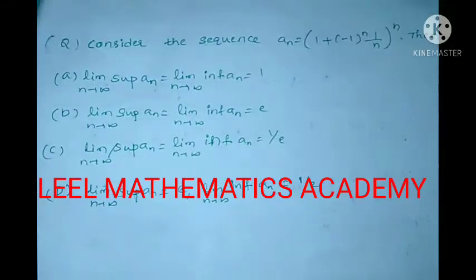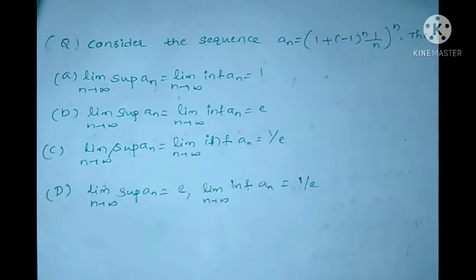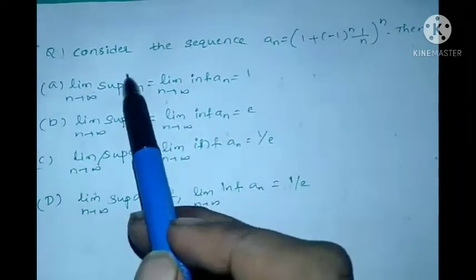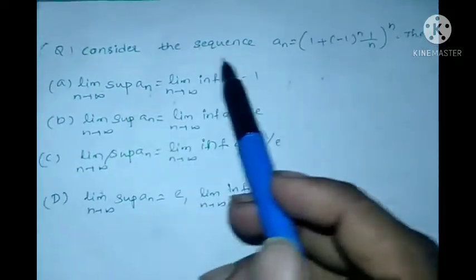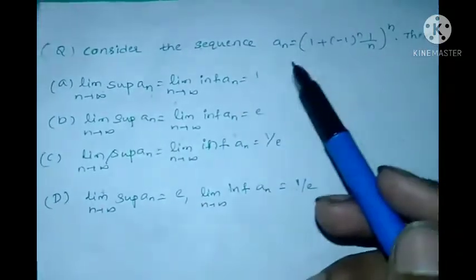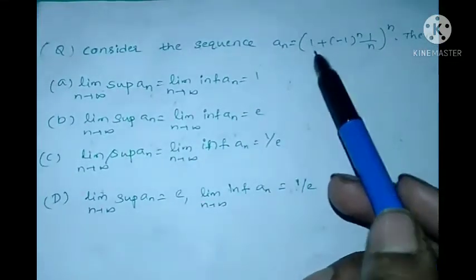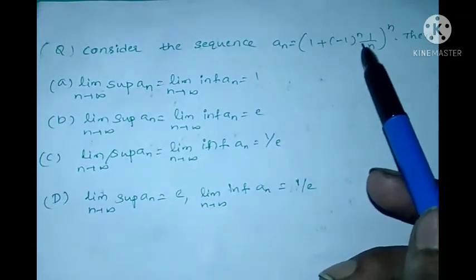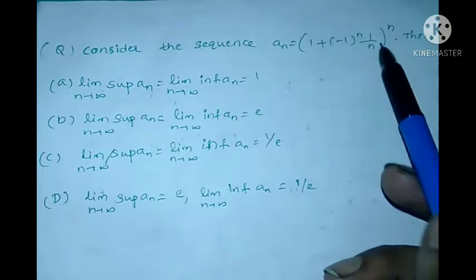Hello viewers, welcome to my channel Lele Mathematics Academy. This is the fourth video in the KSET Mathematical Sciences tricks series. The question is: consider the sequence a_n equal to (1 + (-1)^n / n)^n.